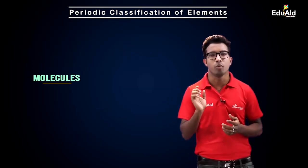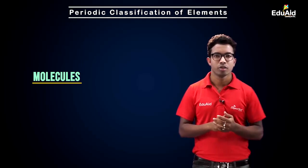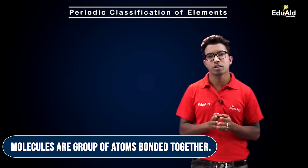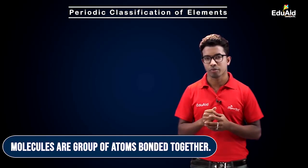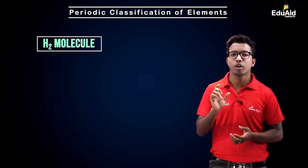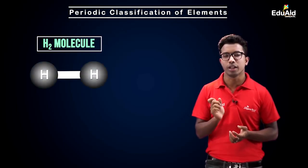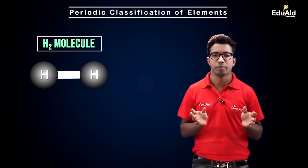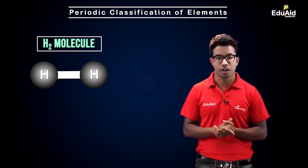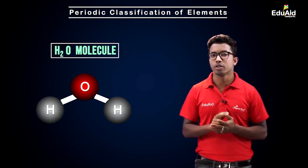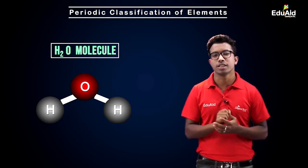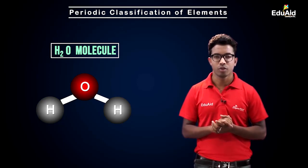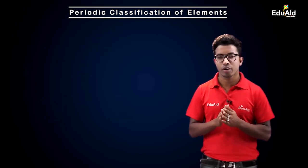Now let's understand what a molecule is. Molecules are completely different from atoms. In a molecule we can have different kinds of atoms strongly bonded together, and similar kinds of atoms can also be bonded together. For example, in a hydrogen molecule, two hydrogen atoms are bonded together, which is why the molecular formula of hydrogen is H₂. Similarly, in a water molecule, two hydrogen atoms are bonded together with one oxygen atom, giving us two different kinds of atoms — hydrogen and oxygen.